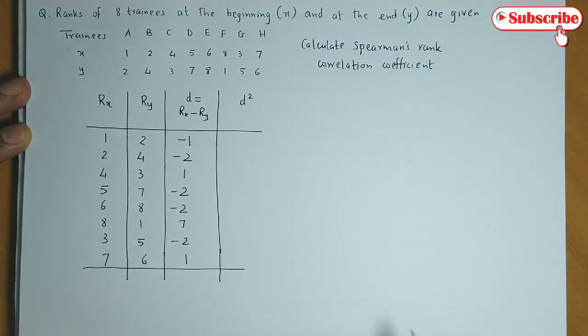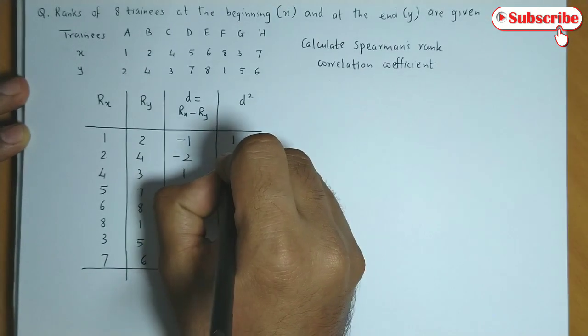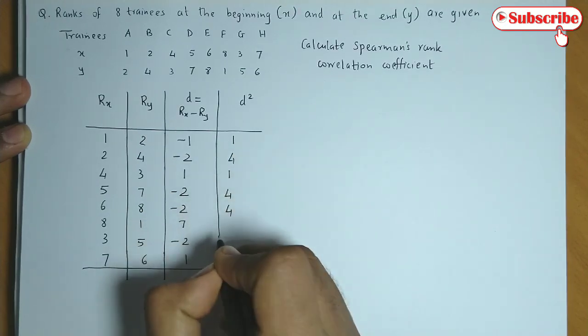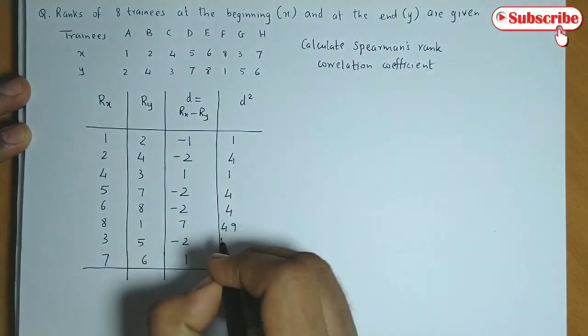We have difference ka square. So we have 1, 4, 1, 4, 4, 49.